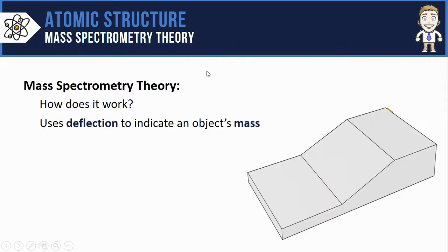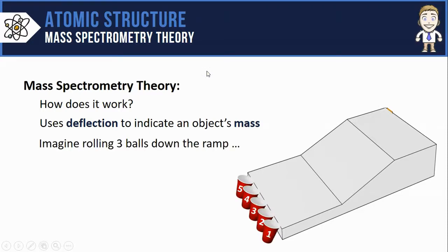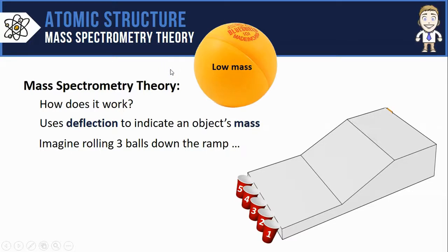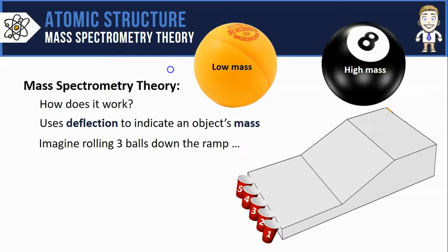To see what I mean by that, imagine this ramp with some numbered cups at the bottom. And then imagine rolling three different types of balls down the ramp. We'll do one type of ball, let's say a ping pong ball, with a very low mass. It's very light.